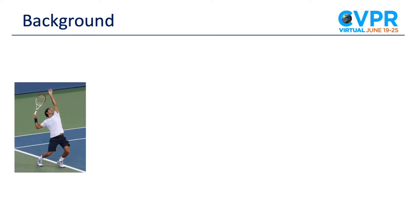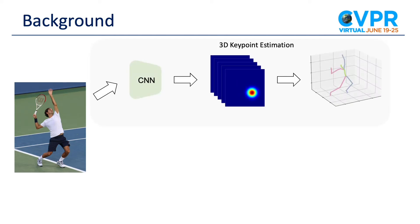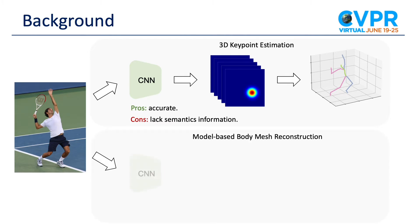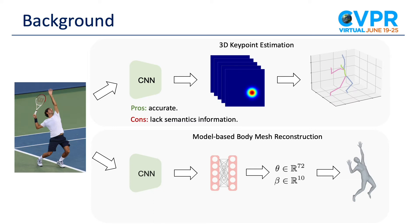Reconstructing 3D human has been studied for a long time. Current methods for understanding 3D human pose can be divided into two categories: 3D key point estimation and body mesh reconstruction. 3D key point estimation methods leverage 3D heat maps to represent body key point positions. These methods are accurate, but the key point representation lacks semantic information of the human body. For body mesh reconstruction, model-based methods are widely adopted. They first estimate the pose and shape parameters with fully connected layers and reconstruct the body mesh by SMPL. Although SMPL contains rich semantics of the human body, directly estimating the parameters with fully connected layers is hard to train.